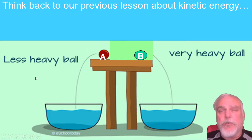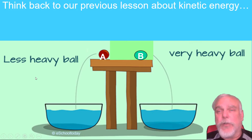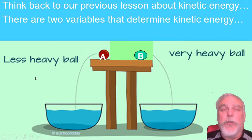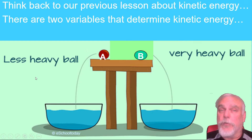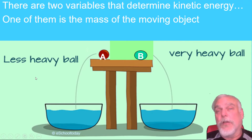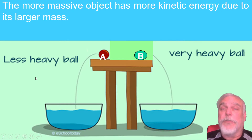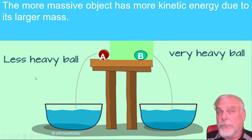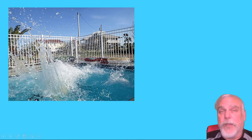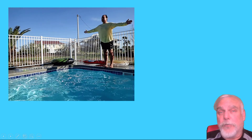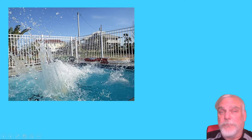To help us best answer this question, let's think back to our previous lesson about kinetic energy. There are two variables that determine kinetic energy. One of them is the mass of the moving object — the more massive object has more kinetic energy due to its larger mass. Here we see a belly flopper whose kinetic energy is being transferred to the water, splashing it up.